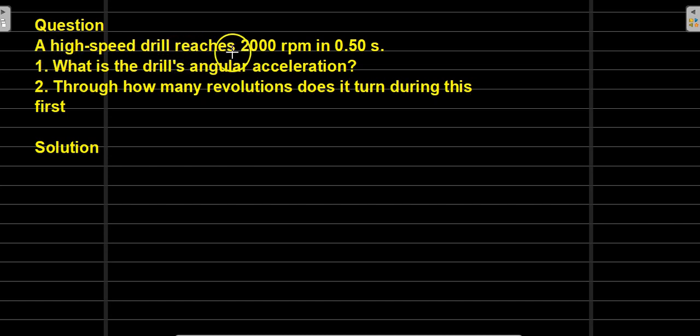A high-speed drill reaches 2000 revolutions per minute in 0.50 seconds. Question 1: What is the drill's angular acceleration? Question 2: Through how many revolutions does it turn during this speed-up process?